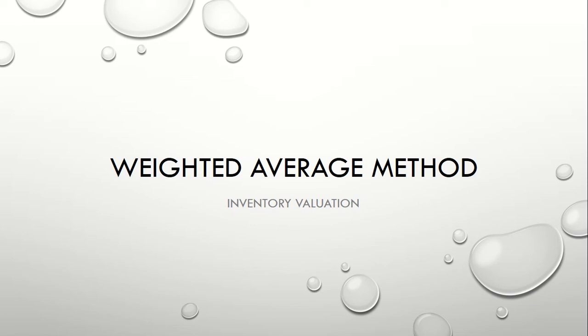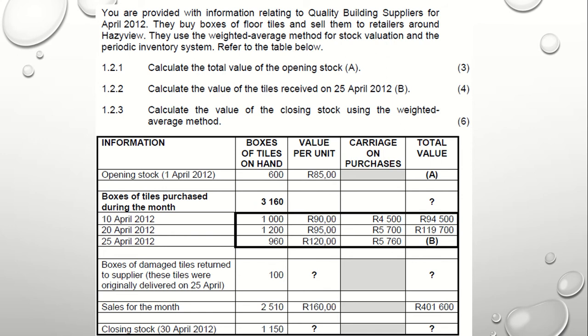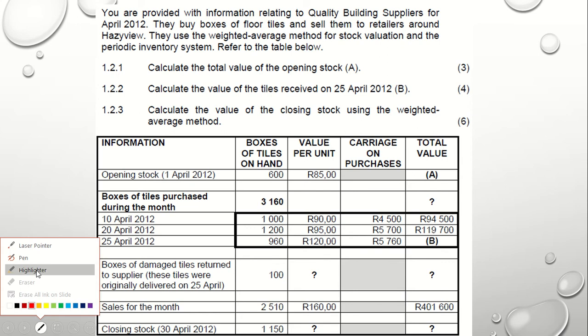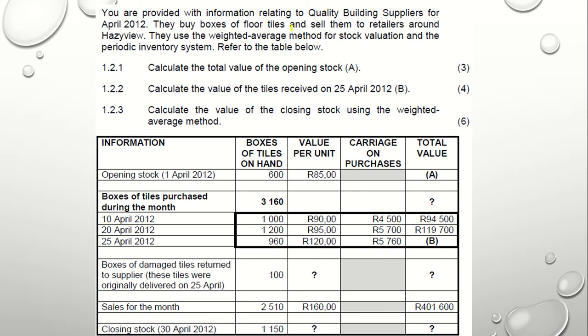Let's calculate cost of sales and the closing stock using the weighted average method. We're also going to be calculating gross profit and preparing a trading account. This question provides information relating to Quality Building Suppliers for April 2012. They buy boxes of floor tiles and sell them to retailers. They use the weighted average method for stock valuation and a periodic inventory system.